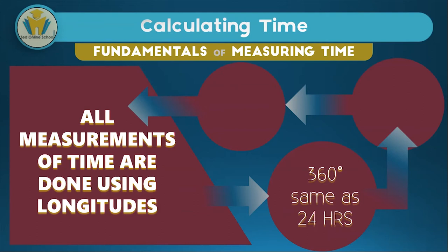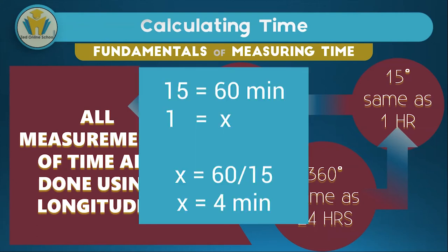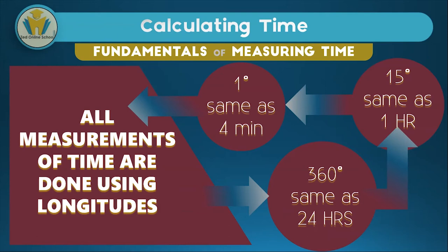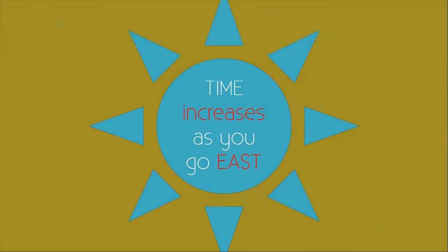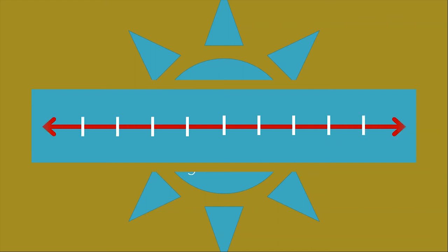When the earth completes one rotation it has been rotating for 24 hours, while in one hour the earth rotates an angle of 15 degrees. If we further make relations, we can find that one degree is the same as four minutes. These four principles are the fundamentals of time. You should also remember that time increases as you go east.